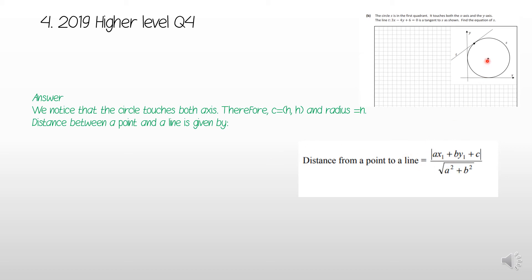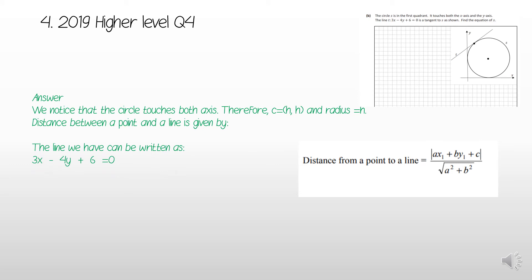The distance between a point and a line is given by the formula from the log tables. We have the center point and the tangent line t, and we can use that formula. The distance from the center to the tangent line must equal the radius r, since the line just touches the circle. The line is 3x − 4y + 6 = 0.